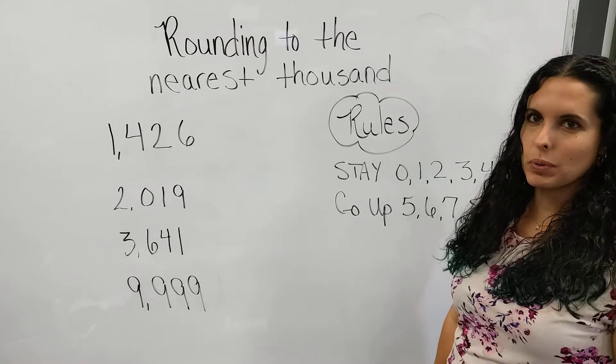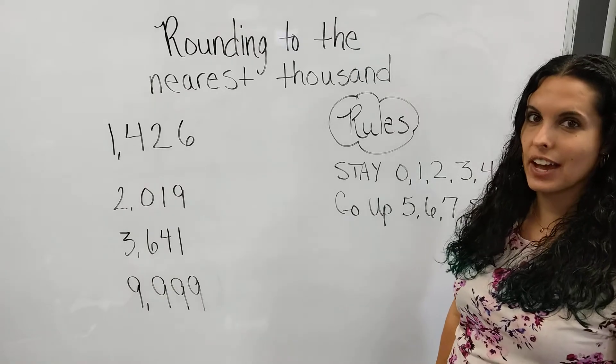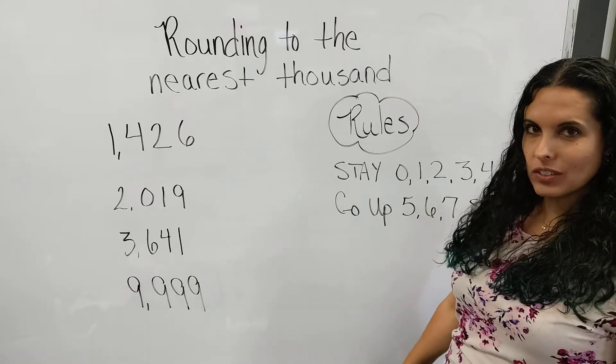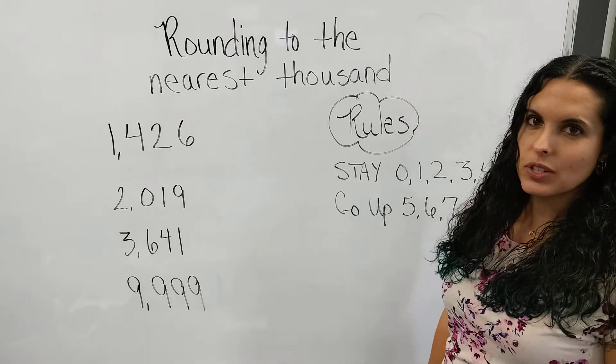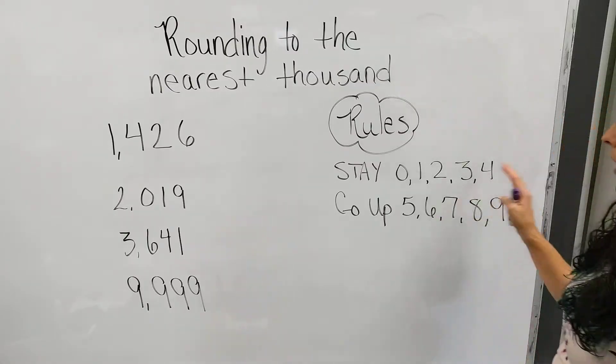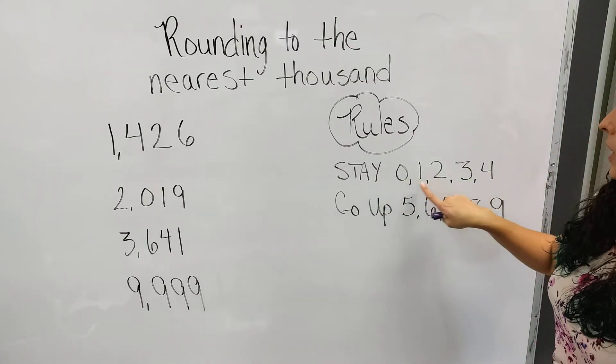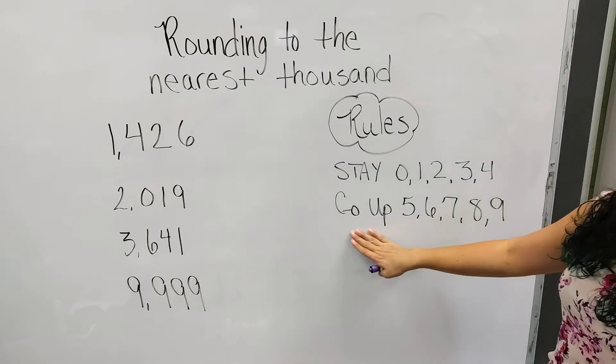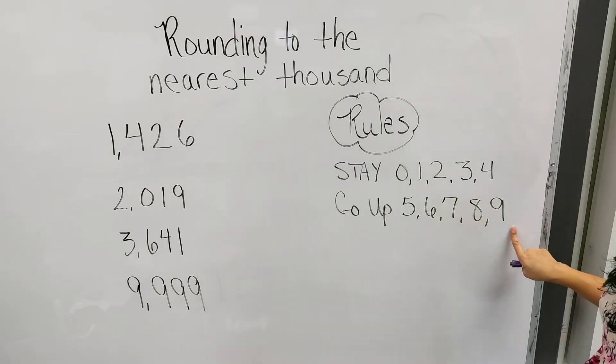In today's lesson we're going to practice rounding to the nearest thousand. When we start rounding, I always tell my students to make sure they write their rounding rules on their paper somewhere. So the rules are: stay 0, 1, 2, 3, and 4; and go up 5, 6, 7, 8, and 9.